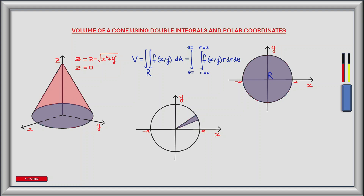Now let's find the limits of the outer integral — that's when r rotates about the angle θ. As r rotates it begins at θ equals 0 and advances 360 degrees or 2π radians around the circle. Each sector represents an angle of dθ, and by summing all the infinitesimally small sectors we get the total volume. We integrate beginning at 0 and ending at 2π radians.